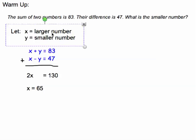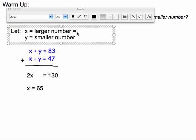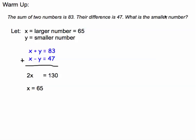I go back into my let statement and make sure I put 65 there, but I have to answer the question—it just wants the smaller number.